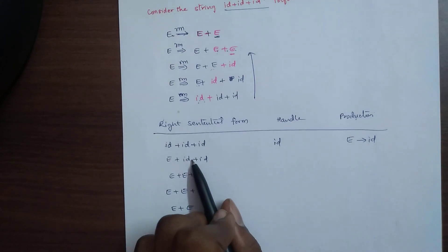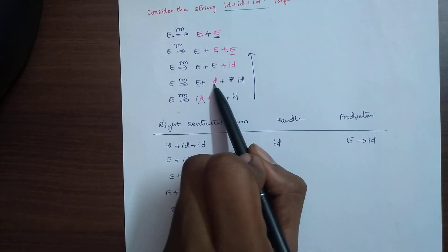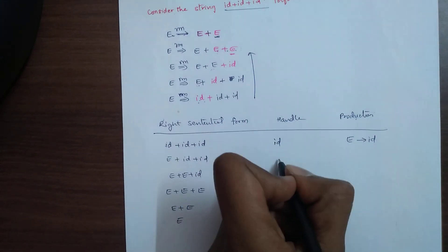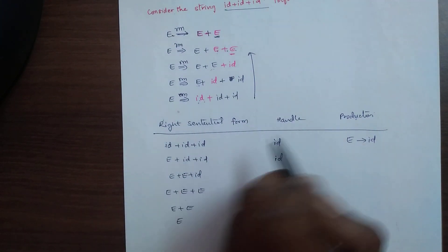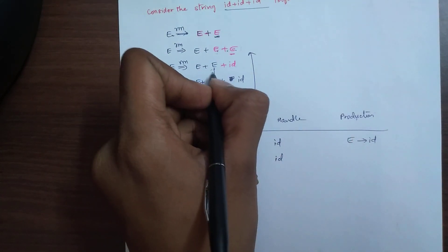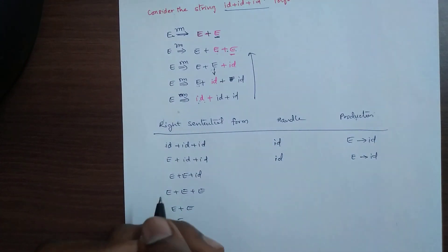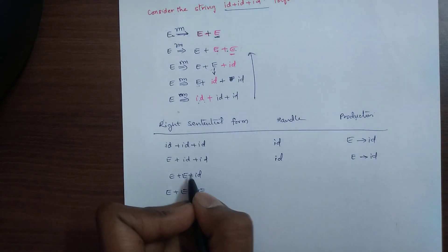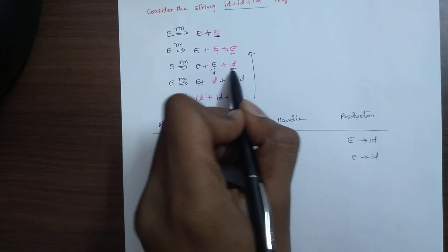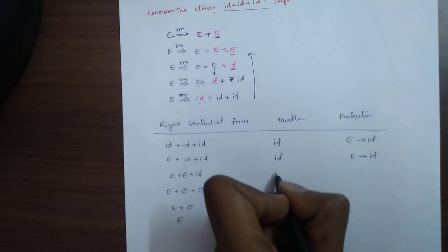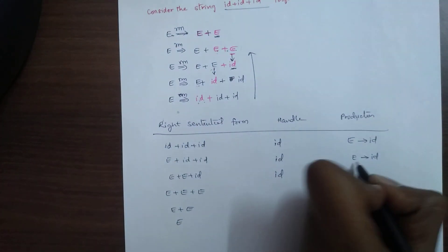Next, the second id shown in red color — id is the handle. The production is E gives id. Third time, id is the handle. The production is E gives id.